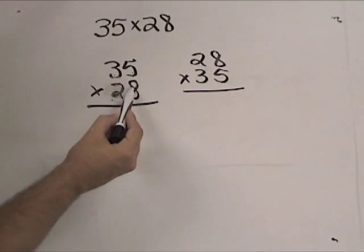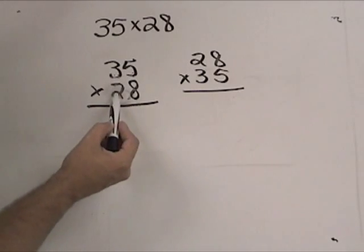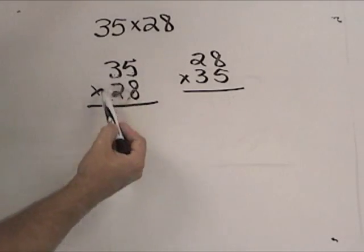What a lot of people were taught is just multiply the 8 times the 5, the 8 times the 3, and then do the next row, put in a placeholder, and so on from there.